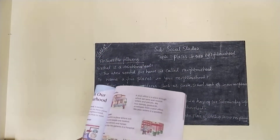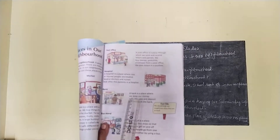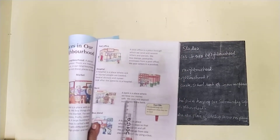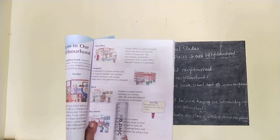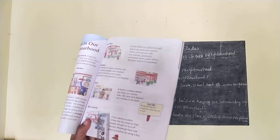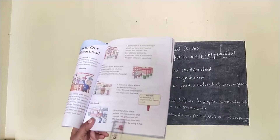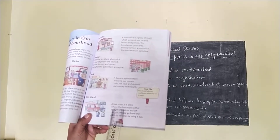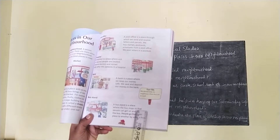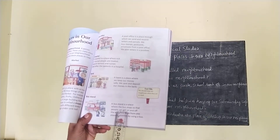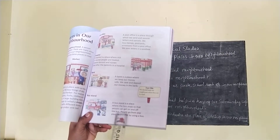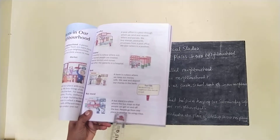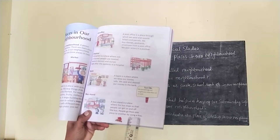Then, bank. A bank is a place where we keep our money safe. We save and deposit our money in the bank. The bus stand is a place where the bus stops so that people can get on and off the bus. People go from one place to another by using a bus.